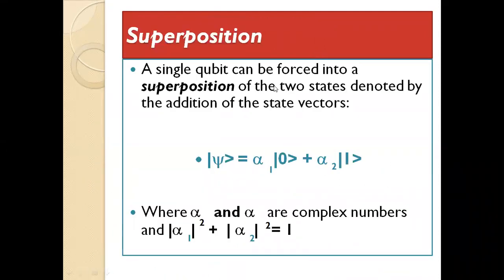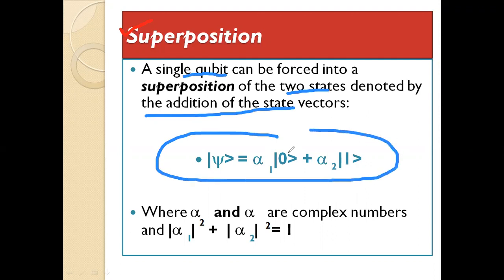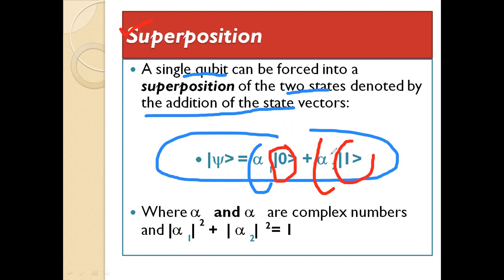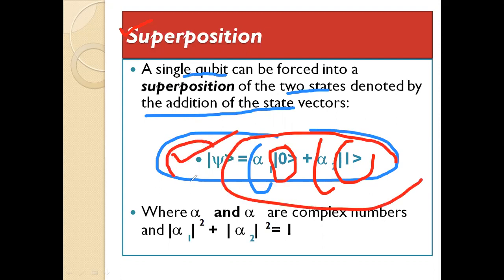At the very beginning of this lecture I used the term superposition. So what is superposition? A single qubit can be forced into a superposition of two states, denoted by the addition of the state vectors: alpha-one times |0⟩ plus alpha-two times |1⟩. In simple words, superposition is the combination of these two states to form a new one, where alpha-one and alpha-two appear as coefficients before the ground state and the excited state respectively.